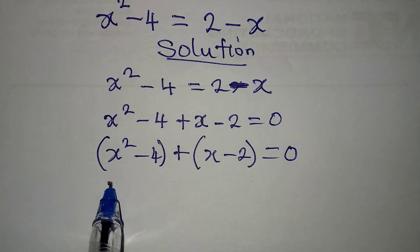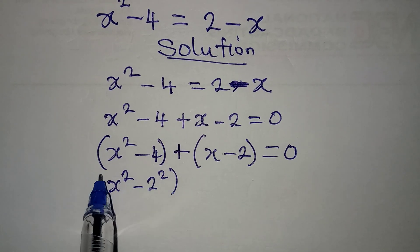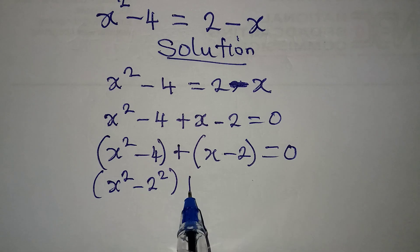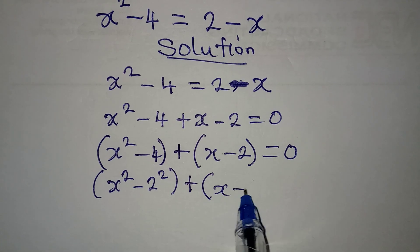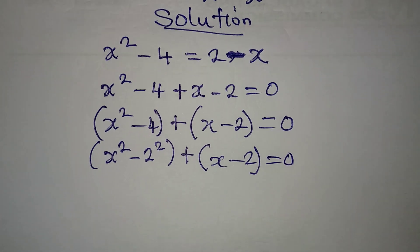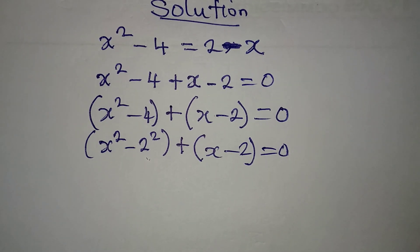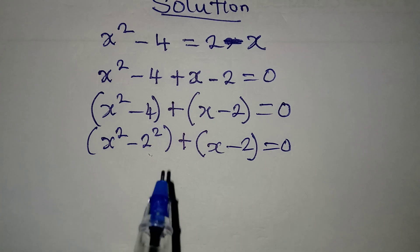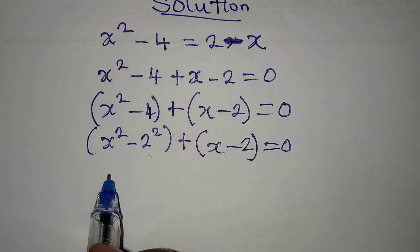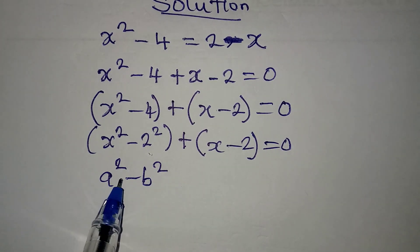If you look at this, this is the same thing as x squared minus 2 squared in this bracket, then plus x minus 2 equals 0. For this, we can apply difference of two squares. In case you have forgotten, difference of two squares is when you have a squared minus b squared.